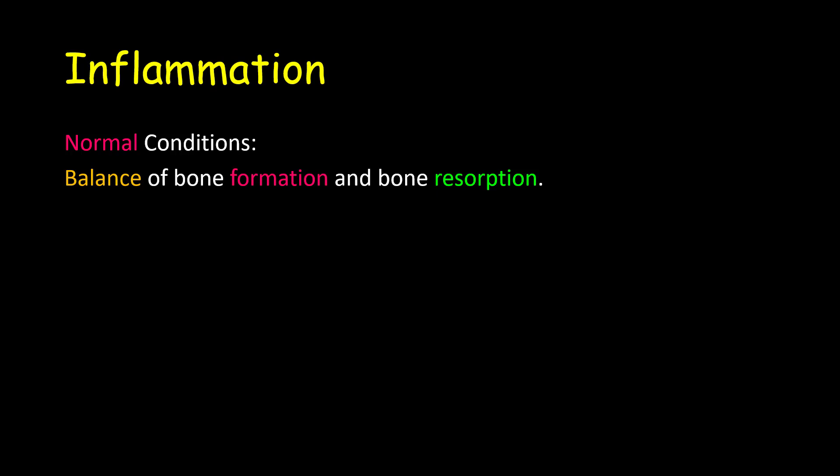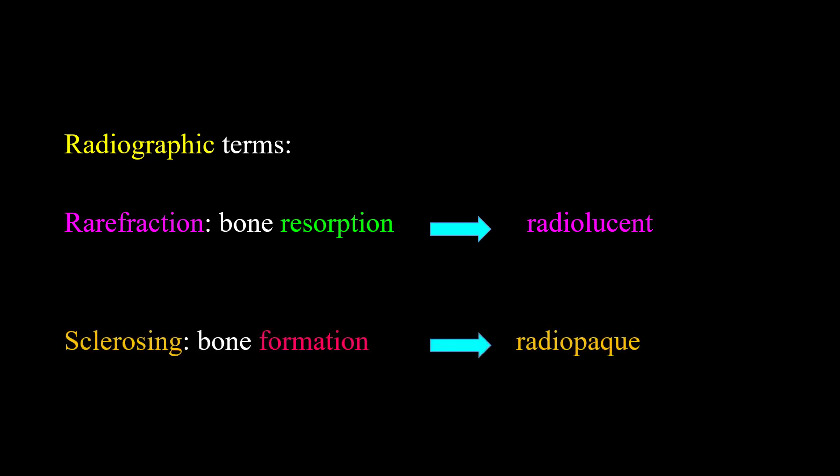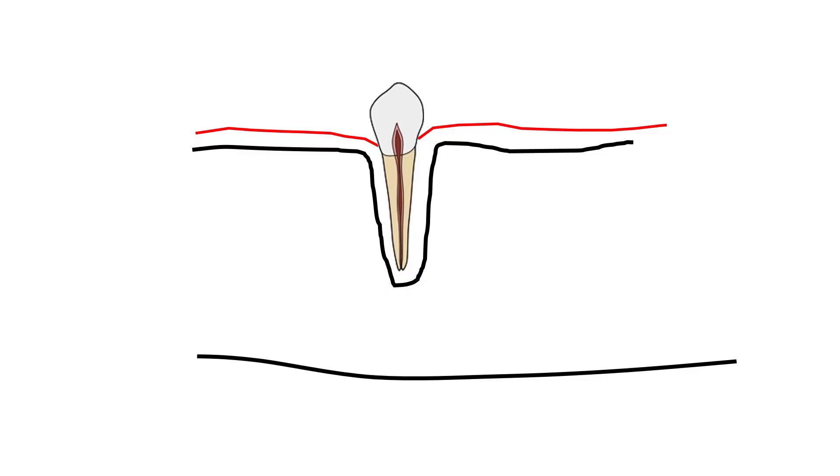We have two radiographic definitions. Whenever we have bone resorption, it is called rarefaction and the radiographic appearance is radiolucent. Whenever we have bone formation, it is called sclerosing and the radiographic appearance is radiopaque.